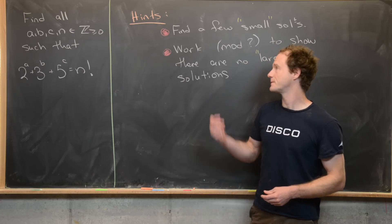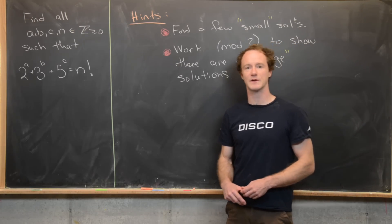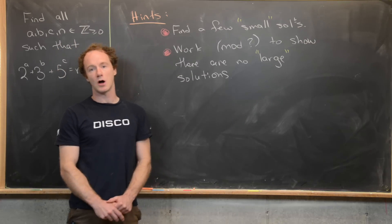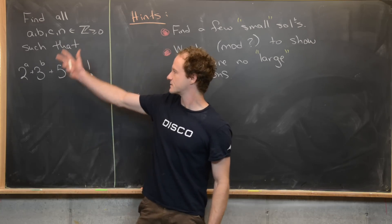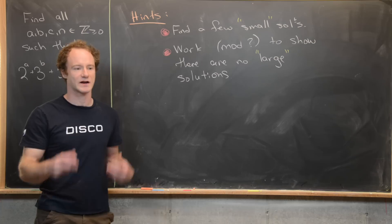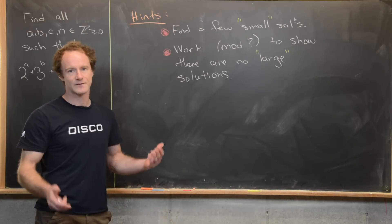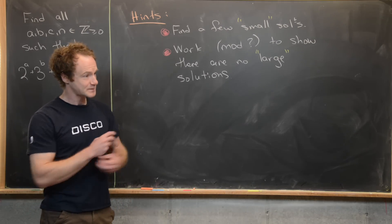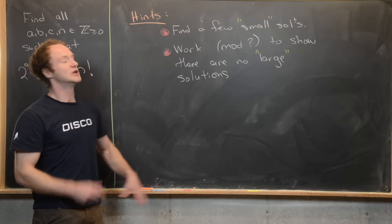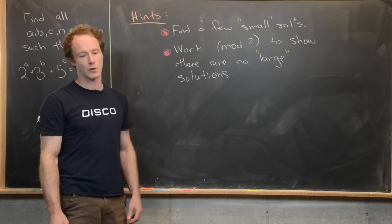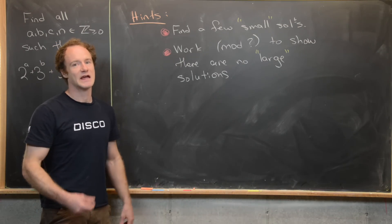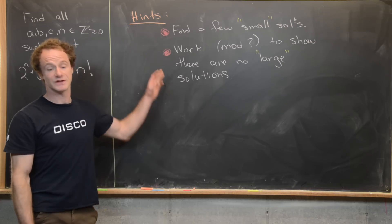Before we look at a solution, I'm going to give you a couple of hints. My first hint is to find a few small solutions. Generally whenever you've got some sort of equation like this over the natural numbers, there are only going to be a handful of solutions, usually less than five. The first goal should be to find those solutions, and then the second goal should be to show there are no solutions after a certain point. You'll work with residues modulo something to prove there are no large solutions.